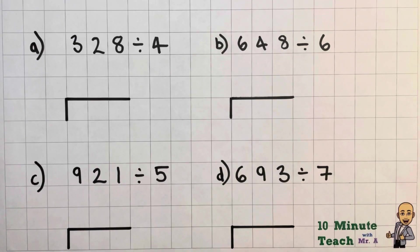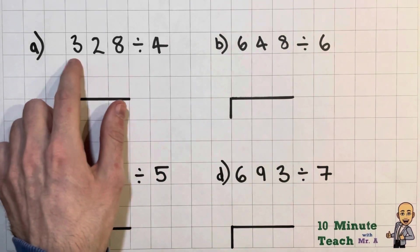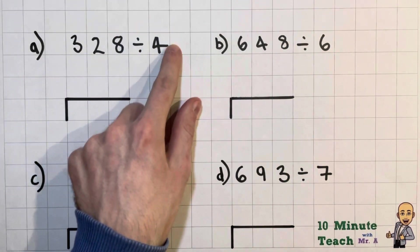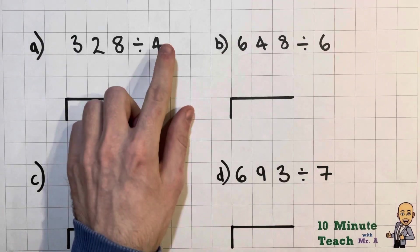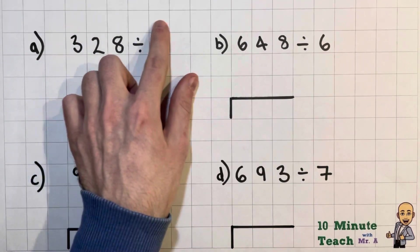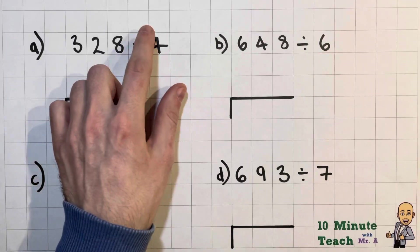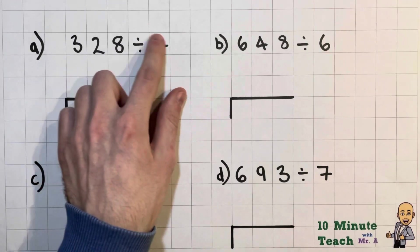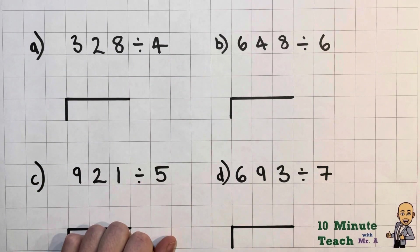Hi guys and welcome to another 10 minute teach with Mr A. In this lesson we're going to be looking at dividing a three digit number by a one digit number. So that is basically splitting this number into this many equal pieces. We'll help ourselves out with a little bar model as well.